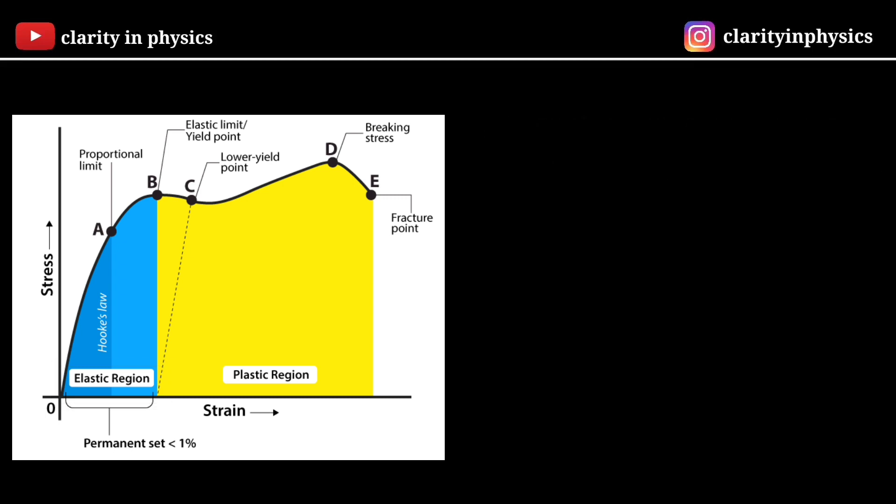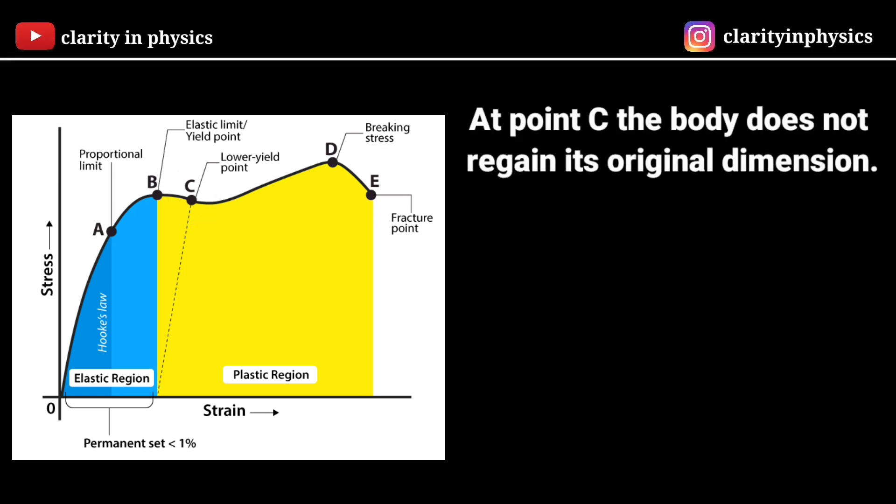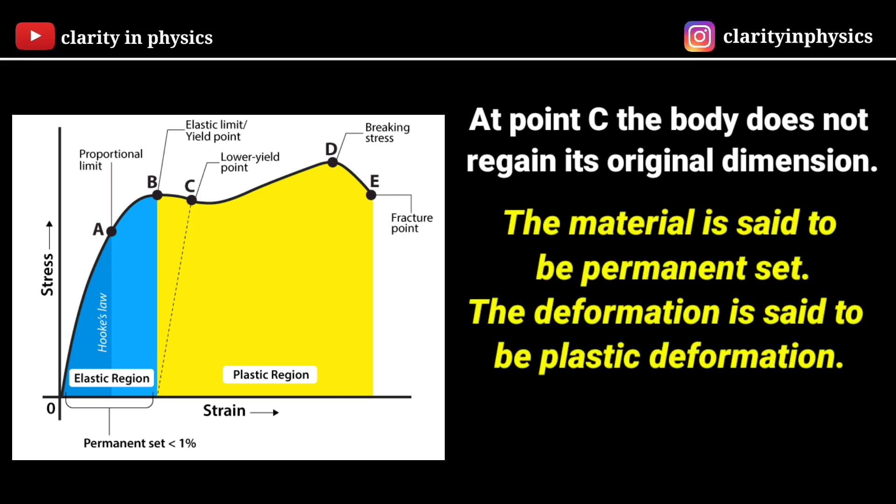If the load is increased further, the stress developed exceeds the yield strength and strain increases rapidly, even for a small change in stress. The portion of the curve between B and D shows this. When the load is removed, say at some point C between B and D, the body does not regain its original dimensions. In this case, even when the stress is zero, the strain is not zero. The material is said to have a permanent set. The deformation is said to be plastic deformation.